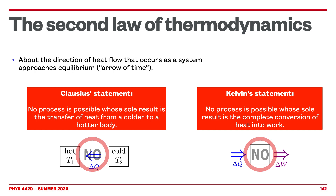There is another statement, which we will show to be equivalent to Clausius's statement before the end of this screencast, and it comes from Kelvin. Kelvin's statement says that no process is possible whose sole result is the complete conversion of heat into work. So if heat is transferred into a system, you cannot have the entirety of that heat transform into work. We are going to see why that is — the real fundamental reason will only come later in this course, but we will already get a pretty good understanding.